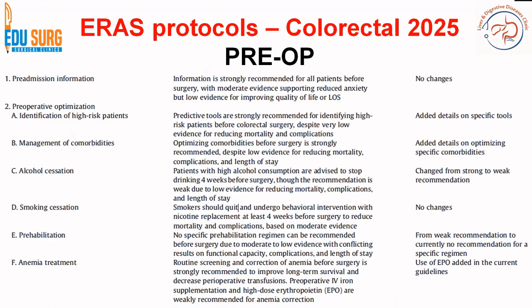Pre-operative optimization is a very important component. We know that if we optimize the patient pre-operatively, post-operative recovery is improved regardless of the type of surgery. High-risk patients specifically include those with lung disease and heart disease. If they are smoking, you need to stop smoking at least four weeks before surgery. Alcohol advice is also to stop at least four weeks before surgery, though the recommendation for alcohol has turned from strong to weak, while for smoking it remains very strong. Comorbidity management and building the patient's fitness before surgery is very important.